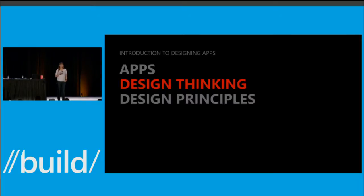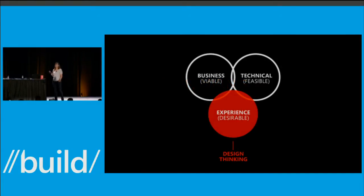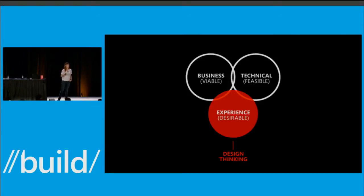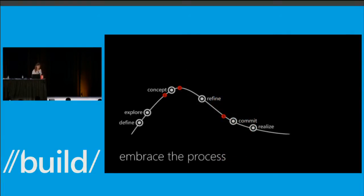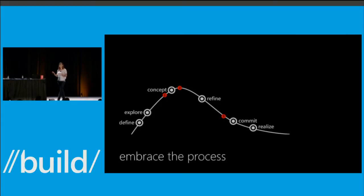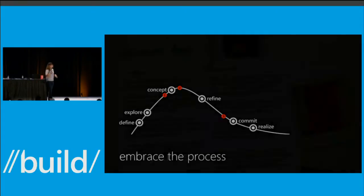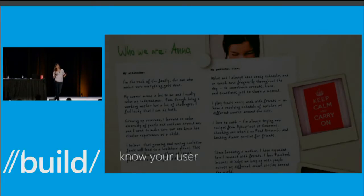I'm going to scratch the surface on design thinking — please dig deeper into it on your own, because it is an important topic. Design thinking is about the business viability, technical feasibility, the experience, the usability, utility, and desirability of a product that you're creating. With respect to experience design, this is an overview of the process you typically take. It is flexible — it can work for both agile and waterfall processes, and you can work it into your development processes seamlessly. One of the key things: you need to have a product idea in mind.